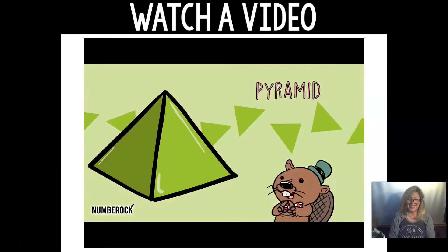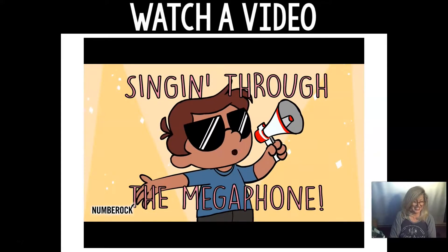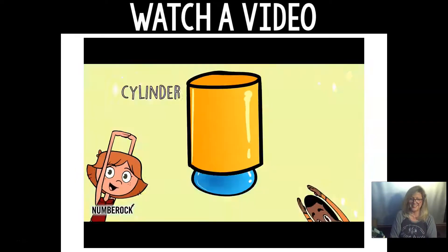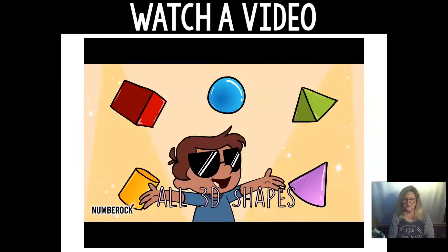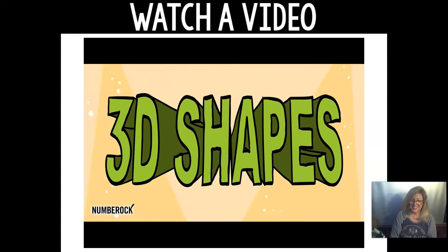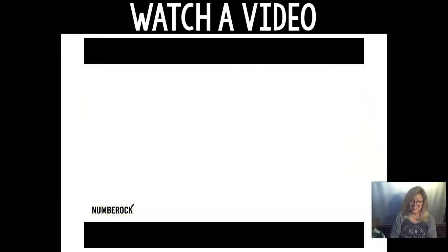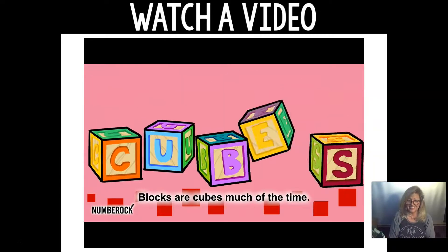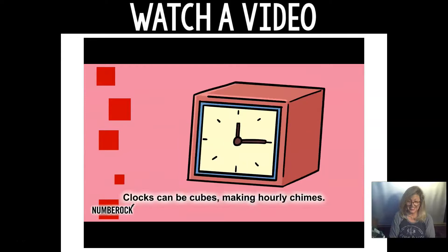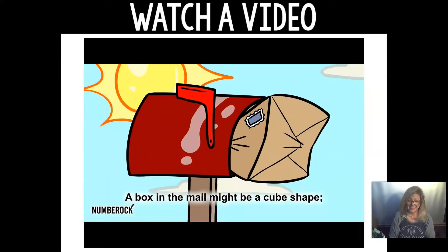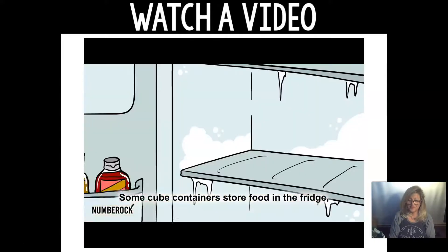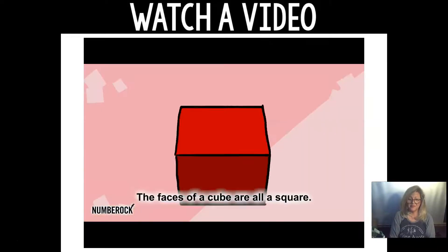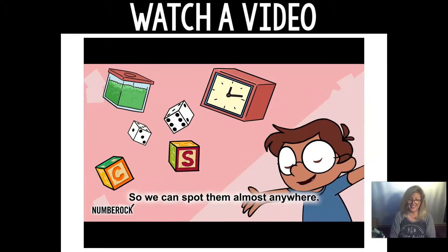Sphere, cylinder, pyramid, cube, cone — all 3D shapes! If you've rolled dice, then you've rolled cubes. Iron crystal cubes can be grown in tubes. Blocks are cubes much of the time; clocks can be cubes — make an hourly chime. A box in the mail might be a cube shape. Ice cubes can cool your drink. Some cube containers store food in the fridge, and some concrete cubes can hold up a bridge. Faces of a cube are all the same, so we can spot them almost anywhere.